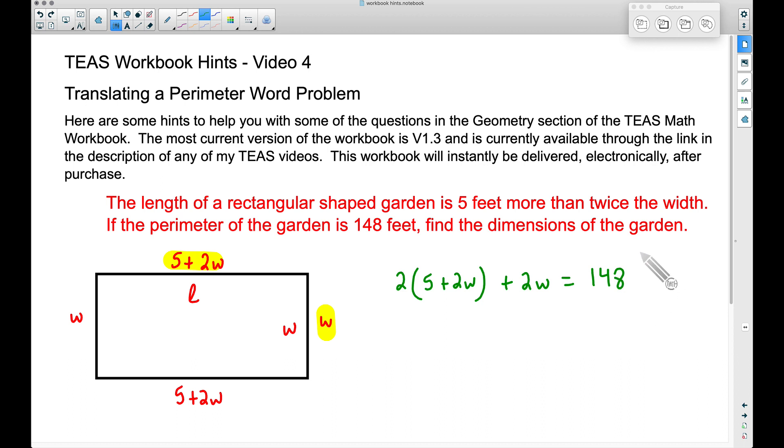By all means, you could have just gone all the way around and added up everything. That will be totally fine. Here I'm going to distribute: 2 times 5 is 10, 2 times 2W is 4W, and let's bring down this 2W here. This equation has just a single variable in it, W.